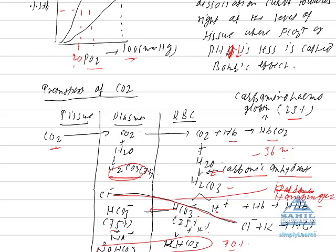If free hydrogen ions start accumulating in RBCs, it can change the pH of blood. But hemoglobin itself acts as a buffer — it combines with free H+ ions to form HHb. The chloride ions which shift from plasma to RBCs bind with potassium ions found in RBCs to form KCl.